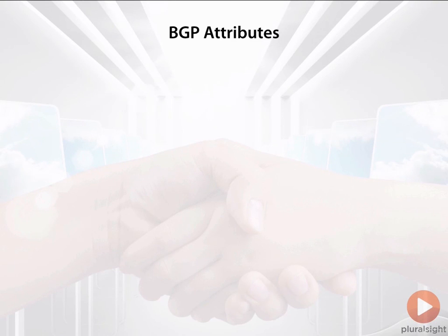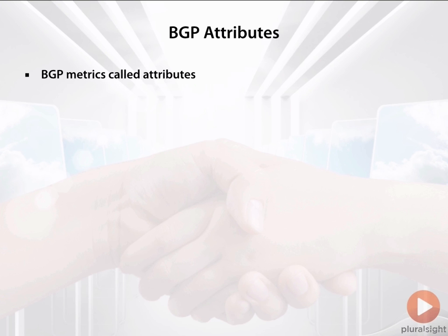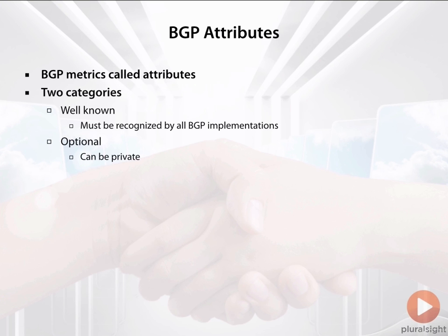Looking at the BGP attributes, BGP does not necessarily have what we call metrics, but rather BGP uses attributes to determine which path will be the best path. There are two categories of these attributes: well-known, which have to be recognized by any BGP implementation, and optional, which can be private and add some value to a certain vendor if they'd like to use optional attributes.